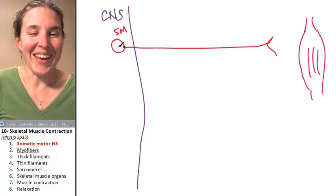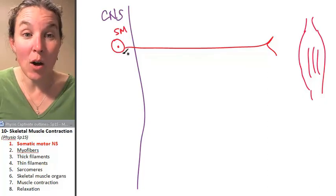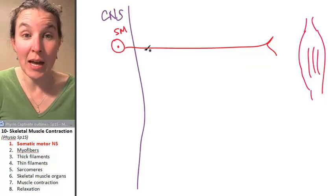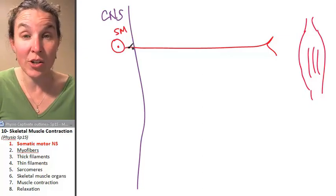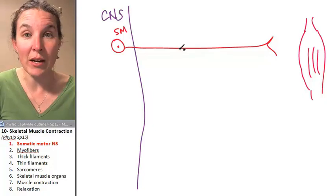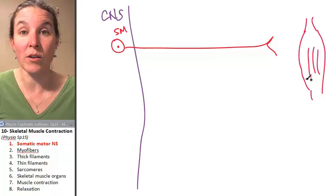If you remember from your anatomy days, the cell body of this somatic motor neuron is actually inside the anterior gray horn of the spinal cord, and then it passes through a spinal nerve and out to the muscle that it's going to innervate.